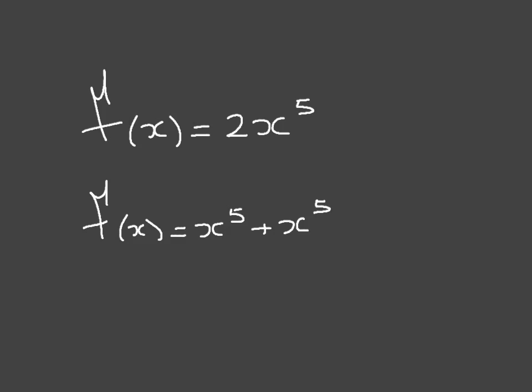And we've seen in a previous video that when we differentiate the sum of two functions, then the result is just the sum of the two derivatives. So in this case, if I were to differentiate this, I would find f dash of x is equal to the derivative of x to the power of 5. That's 5x to the power of 4 plus the derivative of x to the power of 5 again, which is 5x to the power of 4.